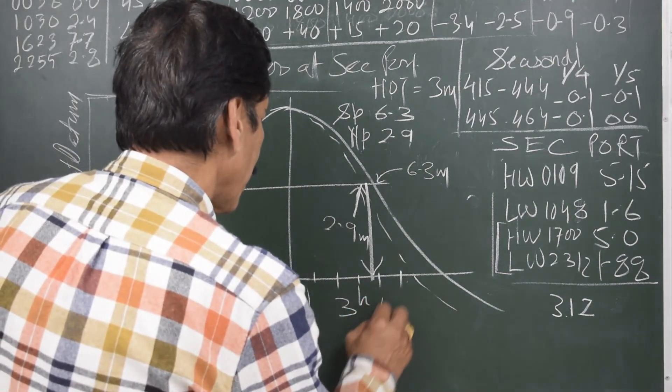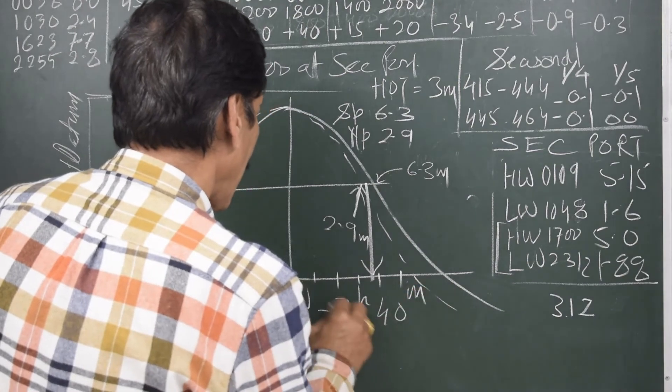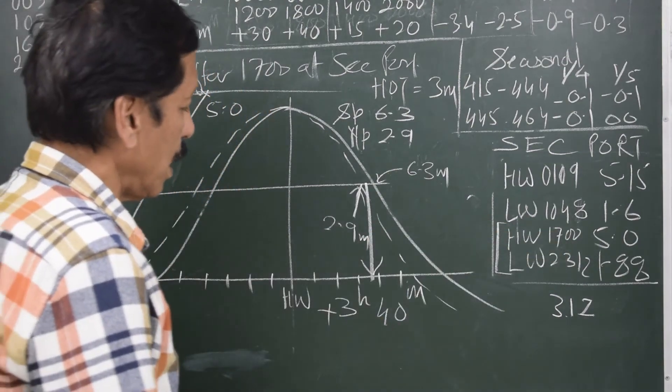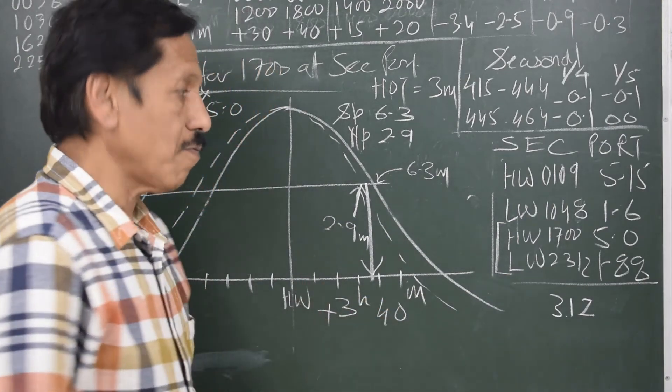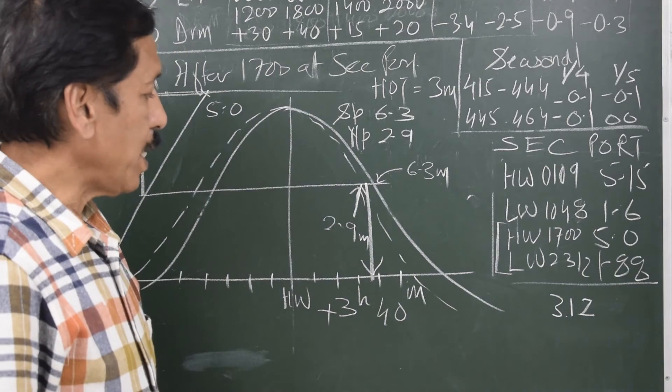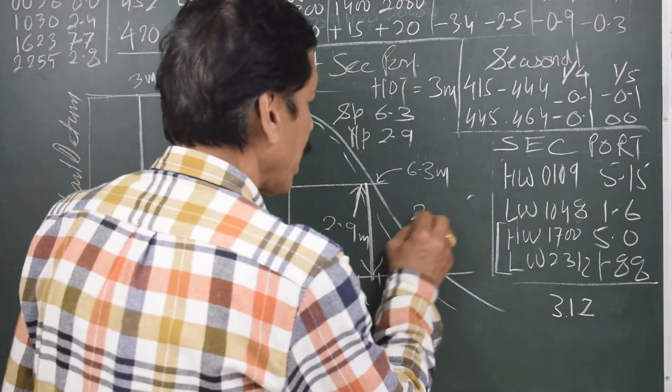What time is high water? High water is 1700 hours. So 3 hours and 40 minutes after 1700 hours, that is 2040. 2040 is the time.